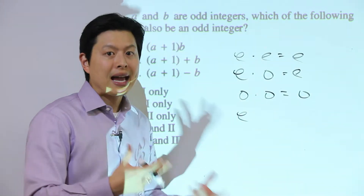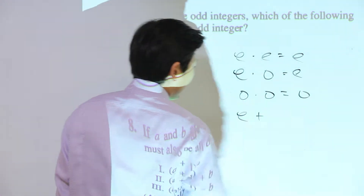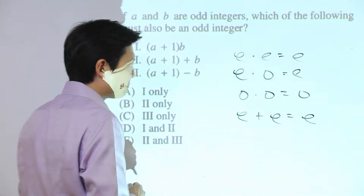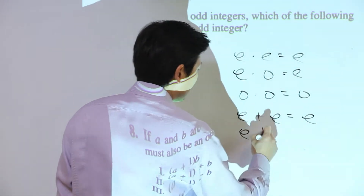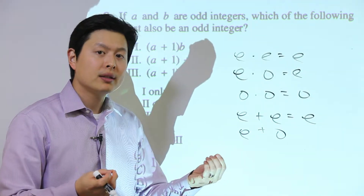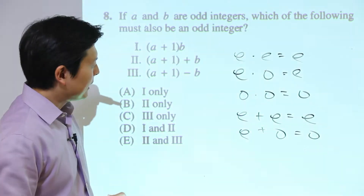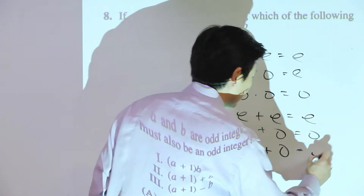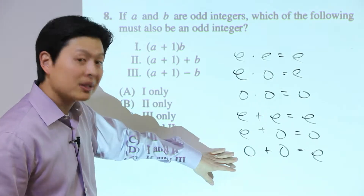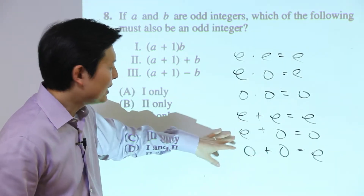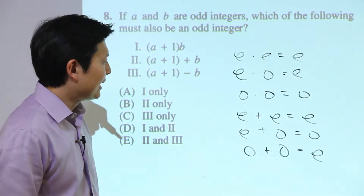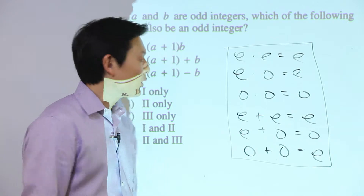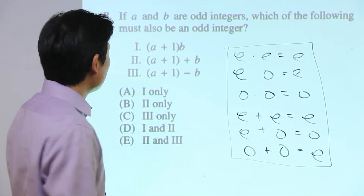For addition and subtraction — subtraction is just adding a negative, so the same rules apply. Even plus even stays even. Even plus odd gives you odd. Odd plus odd gives you even. So the only time addition gives you an odd result is when you mix one even and one odd number. Either memorize this or understand it — it's not hard.